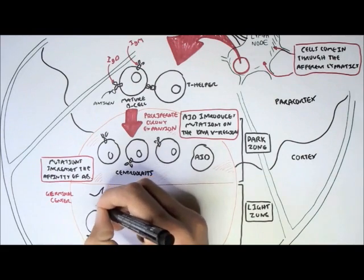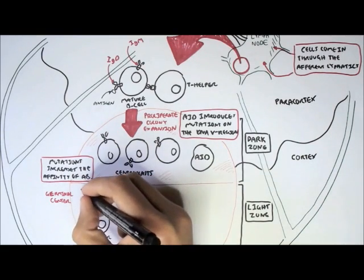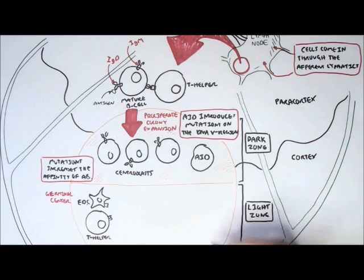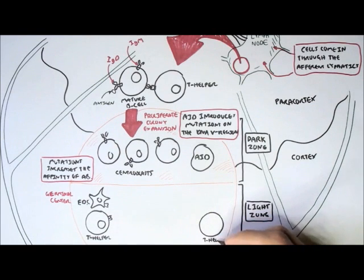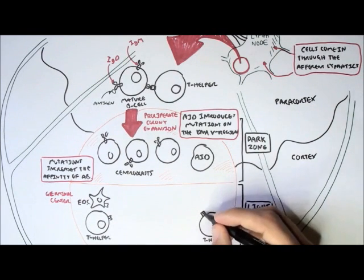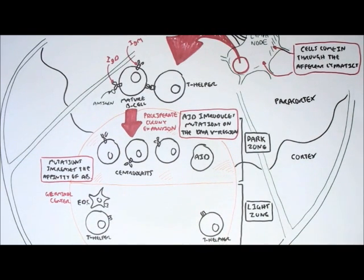Now in the light zone of the germinal center, we have other types of cells, such as follicular dendritic cells, FDC, and T helper cells, with the antigen presented to the mature B-cell in the first place.